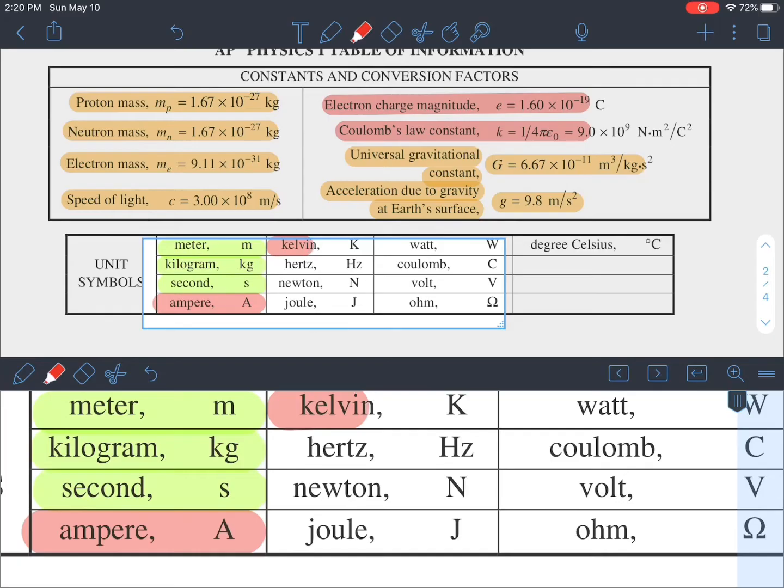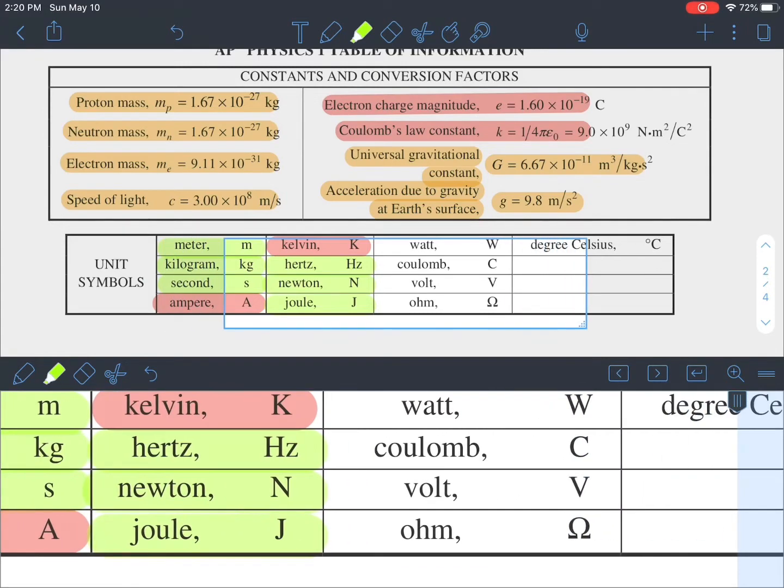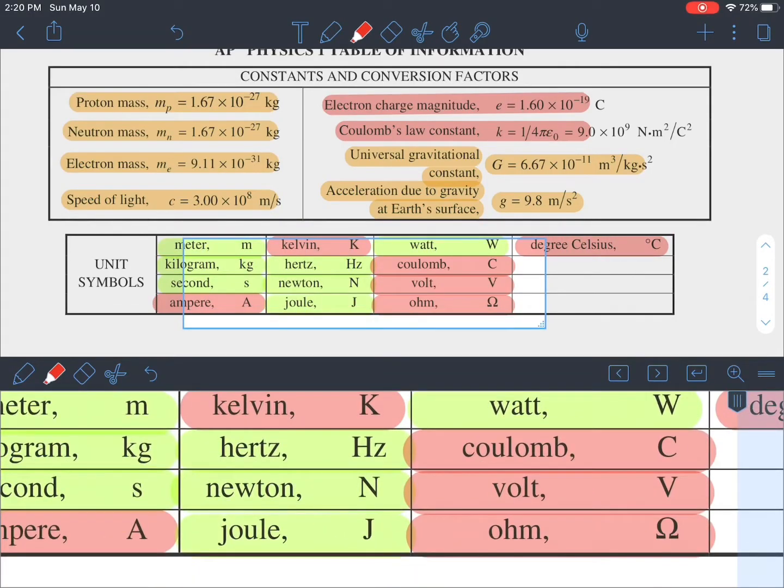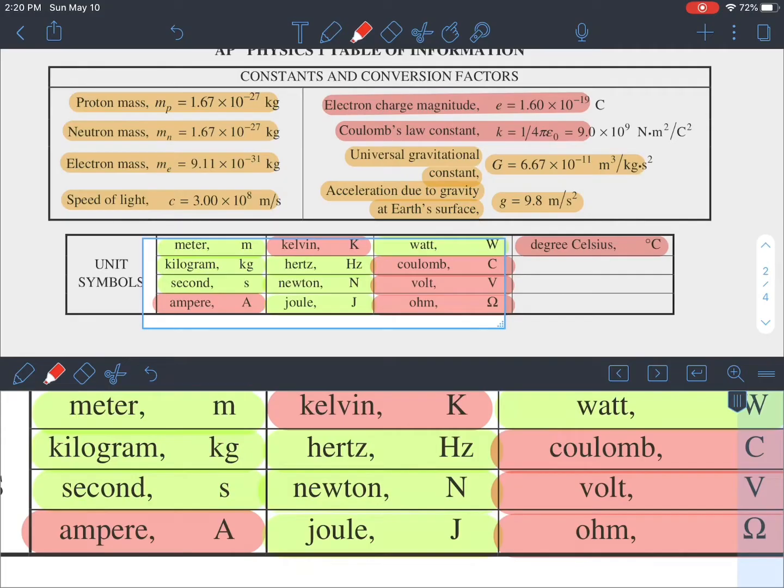The ones that we are highly likely to come across I am highlighting in green. We will not see ampere. We will not see Kelvin. We'll definitely see Hertz, the SI unit of frequency. We'll definitely see Newton, the SI unit of force. Joule, the SI unit of energy. Watt, the SI unit of power. All the rest are part of units that we are not covering or are just temperatures.